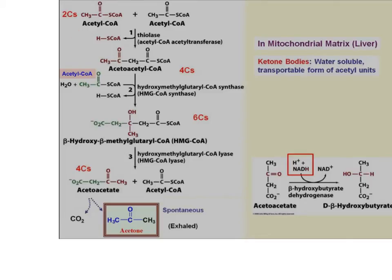The stepwise mechanism is similar to fatty acid synthesis for the first couple of steps. Two acetyl-CoAs condense into acetoacetyl-CoA, then a third acetyl-CoA combines with that to give beta-hydroxy-beta-methylglutaryl-CoA (HMG-CoA). That gets acted on by HMG-CoA lyase — this is where it differs from fatty acid synthesis. This lyase splits it into acetoacetate and an acetyl-CoA, so out of the three acetyl-CoAs used, you get one of them back.